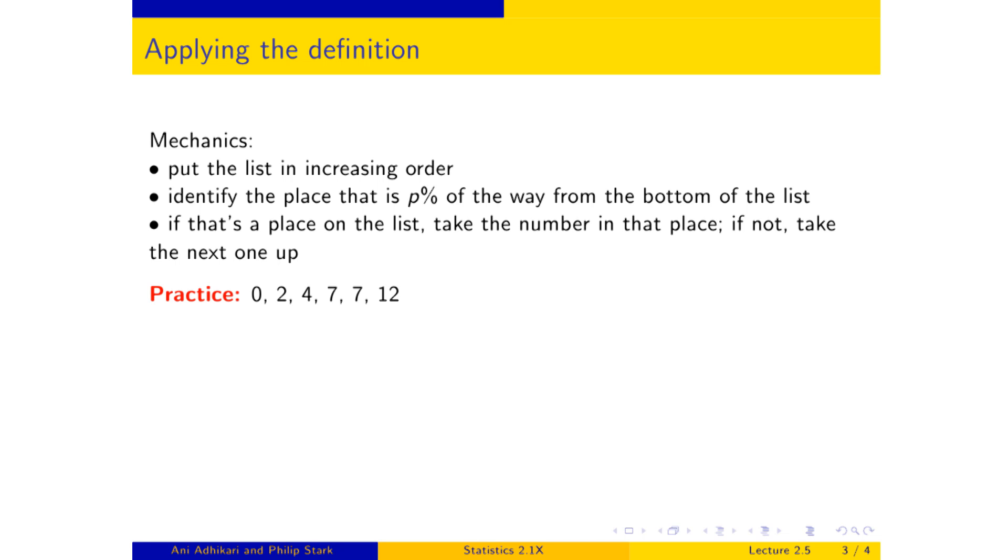So let's do an example. Yes, it's a familiar list, and we will now find the median, which is, as you know, the 50th percentile. So what does the definition say to do? Well, it says put the list in increasing order. We've done that. Identify the place that is p percent of the way from the bottom of the list. Well, p percent, 50% of the way from the bottom. 50% from the bottom is halfway through. That's right here. 50% of 6 is equal to 3. And that is exactly on the list. That is 4. And that means the median is 4 by definition.